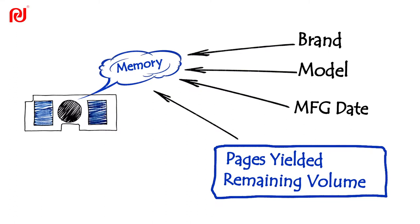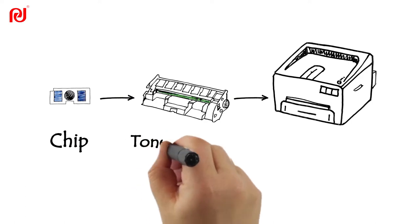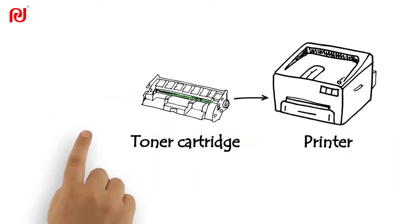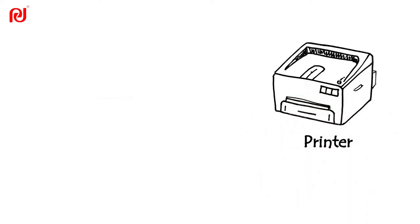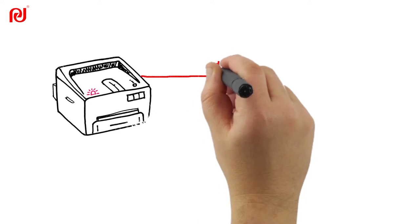First, consumables chip is adhered on a toner or inkjet cartridge. When the cartridge is installed in printer, the chip makes contact with the printer. When it is switched on, the printer will also supply voltage to consumables chip.